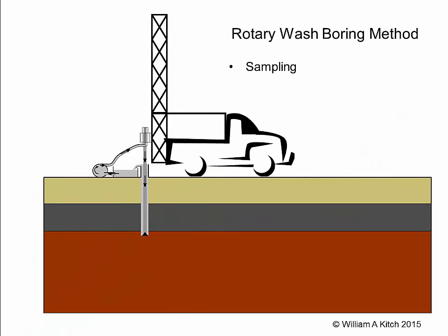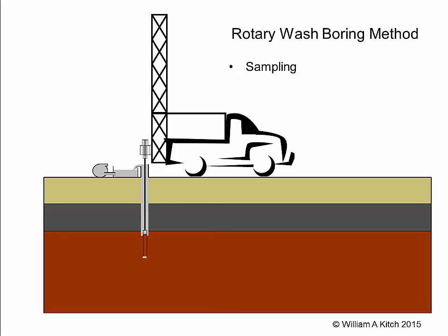When we reach our desired sampling depth, drilling is stopped and all of the cuttings are flushed out of the boring. The pump is then shut down, the hose disconnected from the swivel, and the drill rod removed from the hole. The drilling equipment is replaced with sampling equipment and a sample is taken directly through the drilling mud.